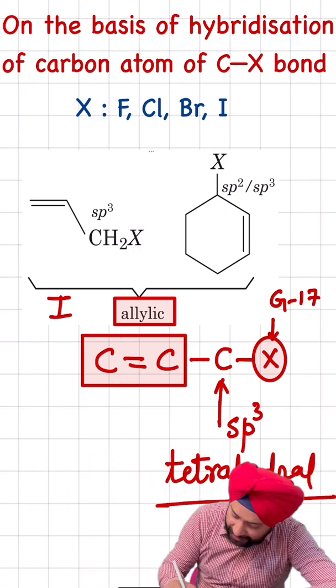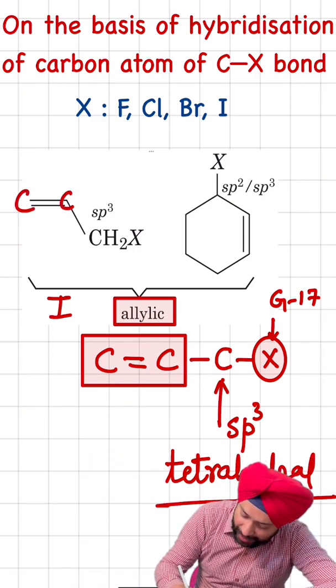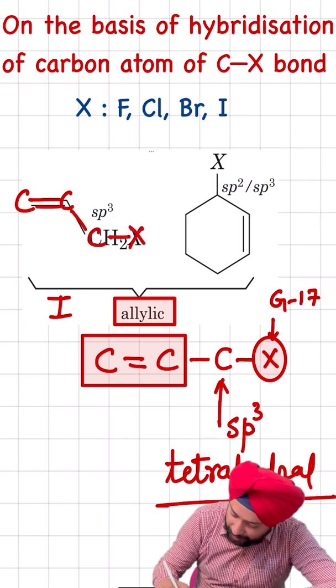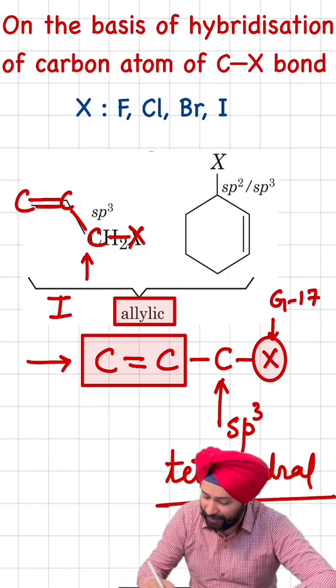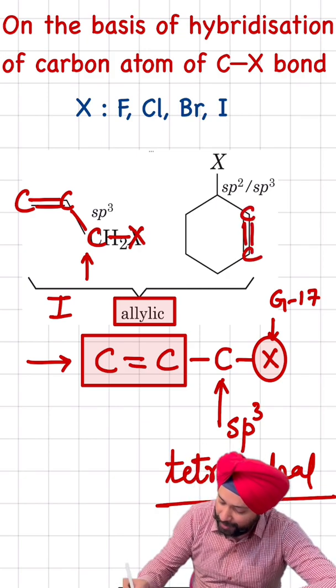In the first example, if you see this carbon-carbon double bond is directly attached with the halogen, so this satisfies the condition of this allylic concept.